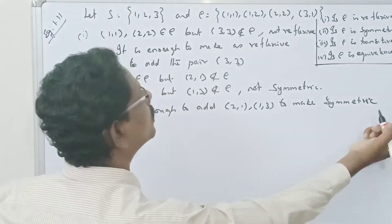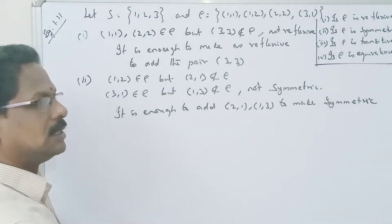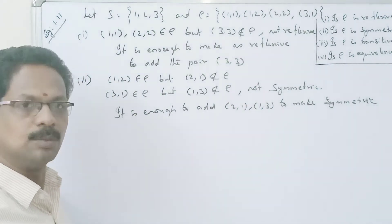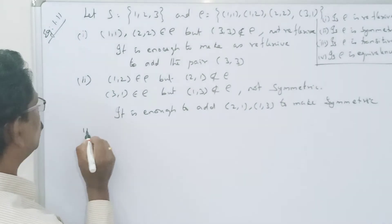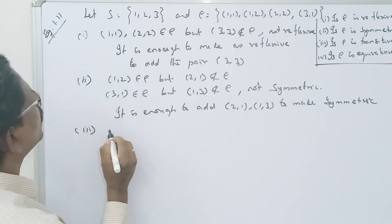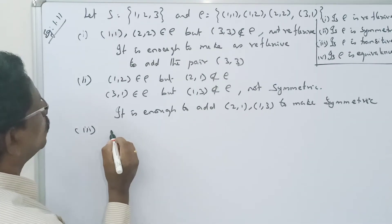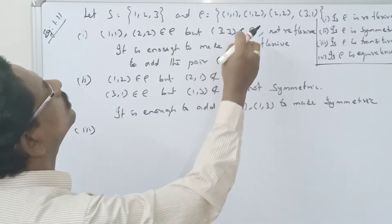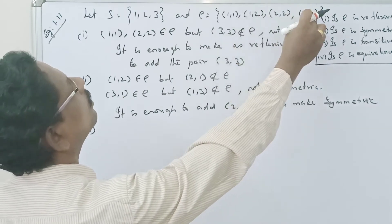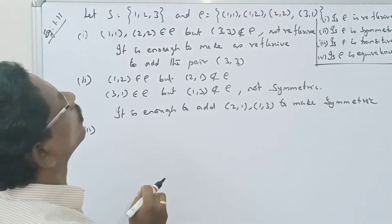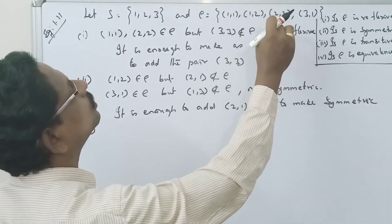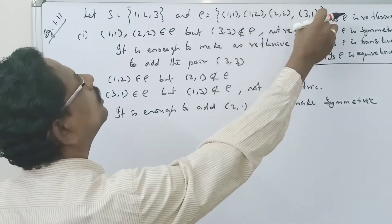Now for transitive: we check the pairs. (1,2) and (2,2) are both in R, so (1,2) should follow.